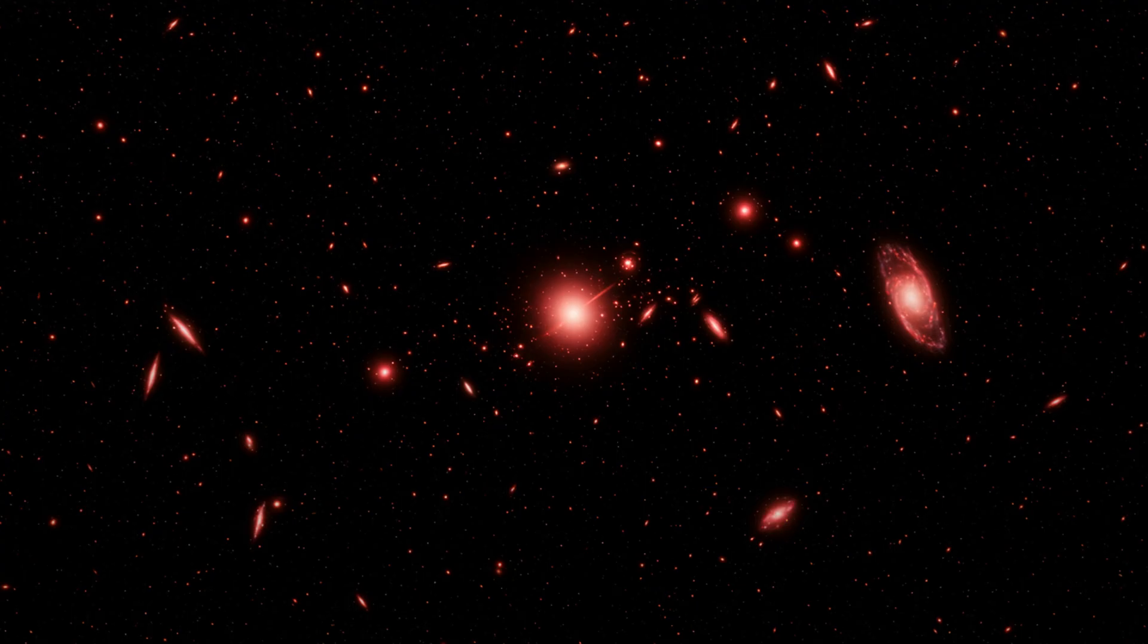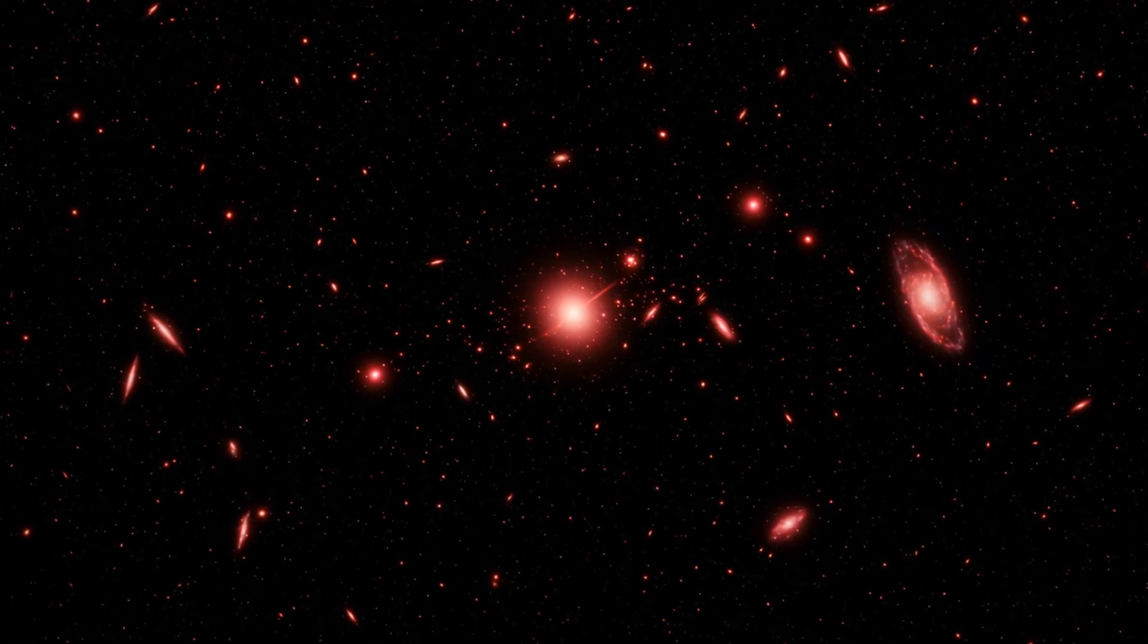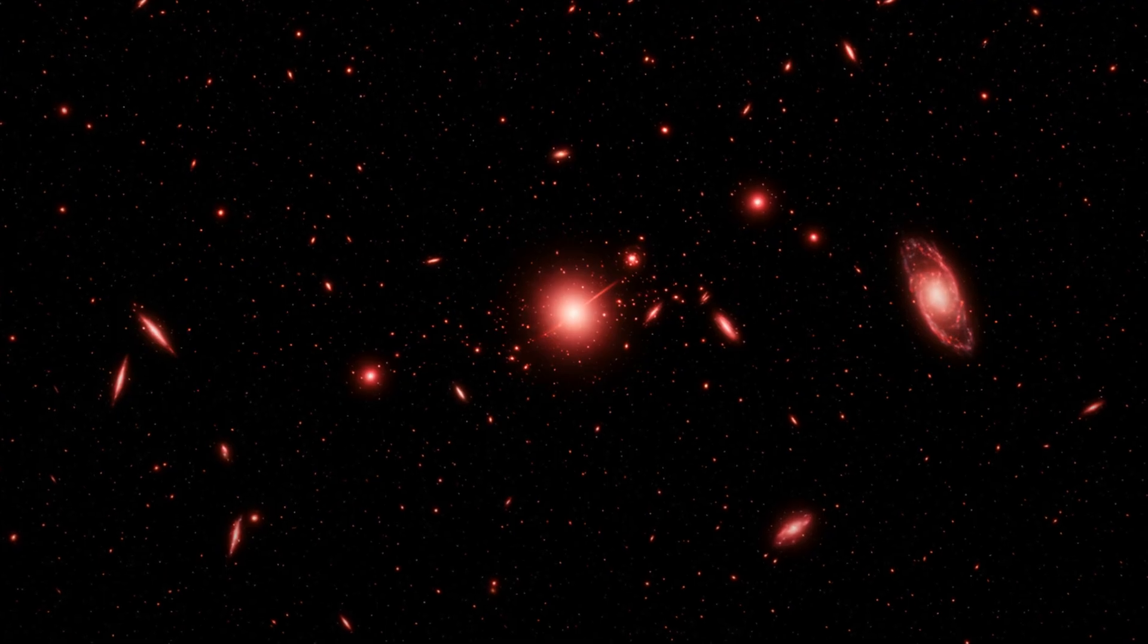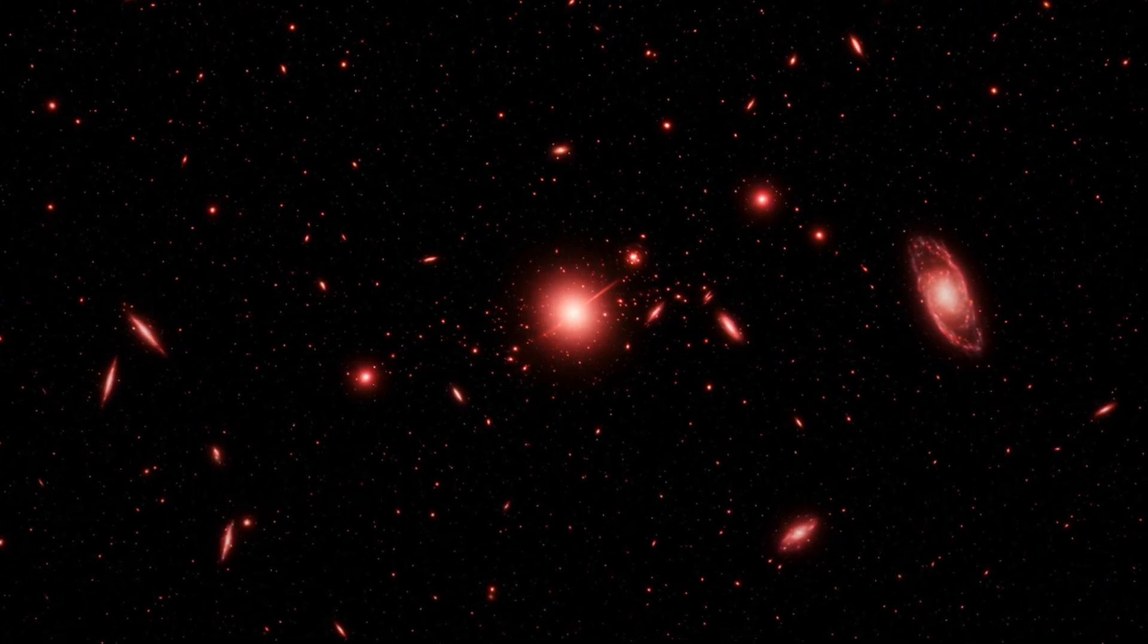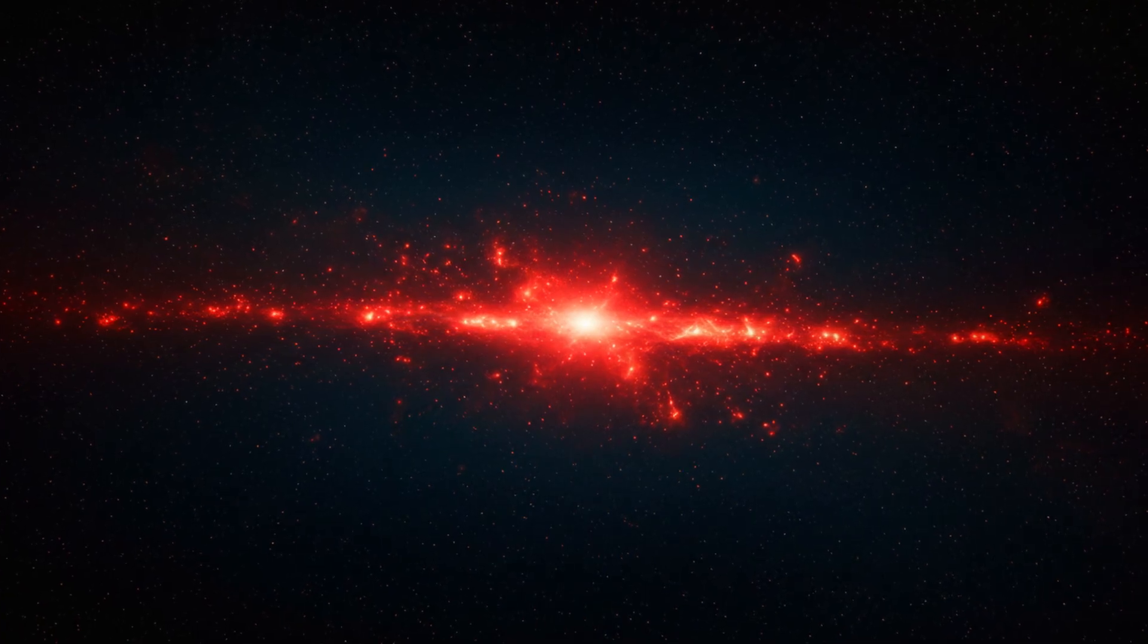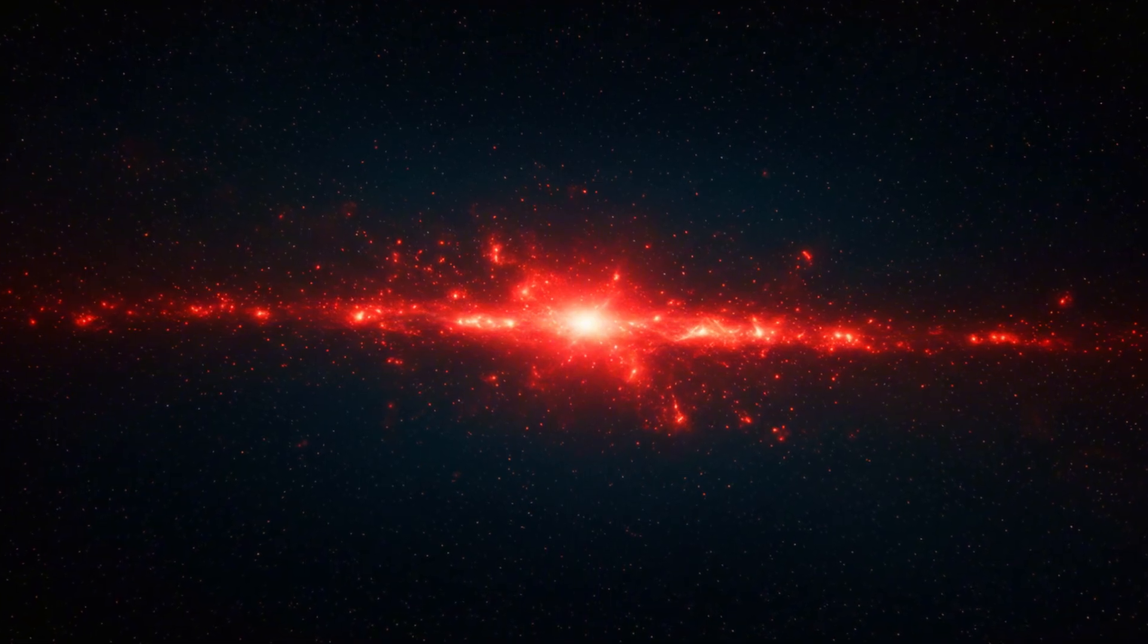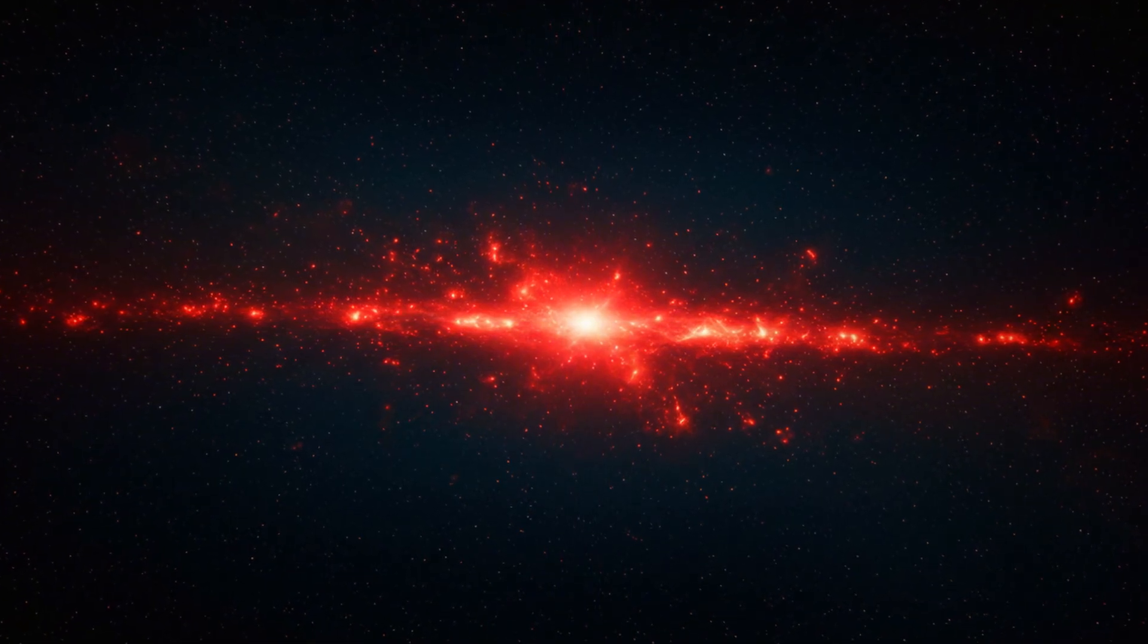As if QS01 wasn't strange enough, James Webb revealed another puzzle, the so-called Little Red Dots. These are tiny, faint reddish objects scattered across Webb's deep field images. They date back to the epoch of Reionization, when the first light sources transformed the early universe.